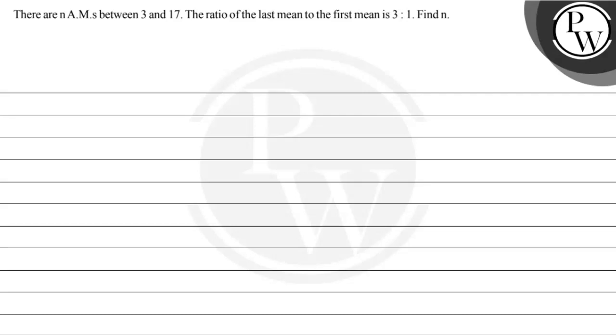Hello. Let us read this question. The question says there are N AMs between 3 and 17. The ratio of the last mean to the first mean is 3 to 1. Find the value of N.